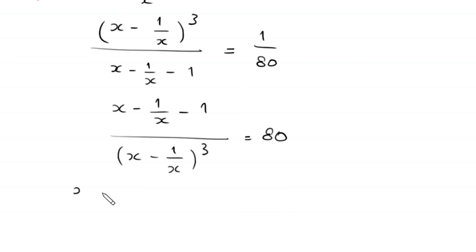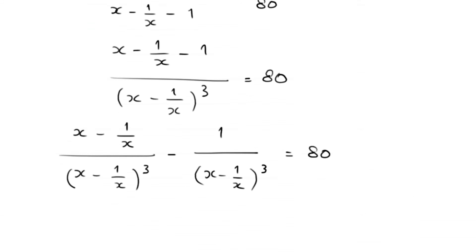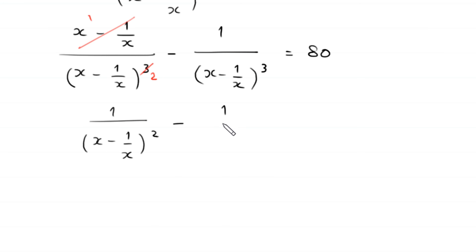This can be written as (x - 1/x) divided by (x - 1/x)³ minus 1 divided by (x - 1/x)³ equal to 80. The first term simplifies — the (x - 1/x) in the numerator cancels with one factor in the denominator, leaving the power as 2. So the equation becomes 1/(x - 1/x)² minus 1/(x - 1/x)³ equal to 80.